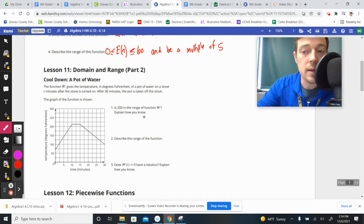Watch this on Tuesday and have it done for this Friday when it's due. So the function W gives the temperature in degrees Fahrenheit that a pot of water on a stove T minutes after the stove is turned on. And after 30 minutes, the pot is completely taken off the stove.